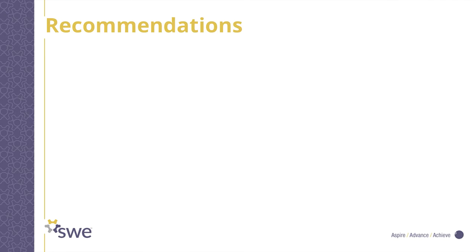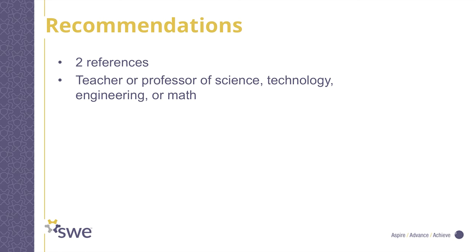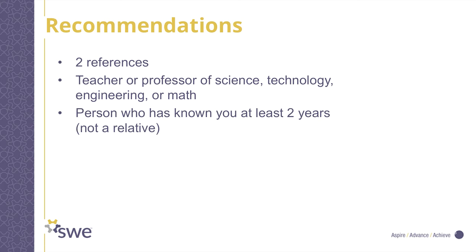You'll need recommendations from two references for your application to be considered: one from a teacher or professor, ideally from a science, technology, engineering, or math class. The personal reference is someone who has known you for at least two years and is not a relative.